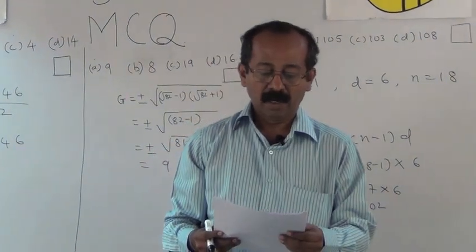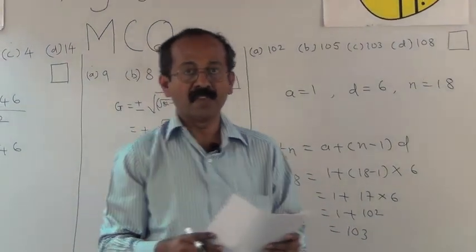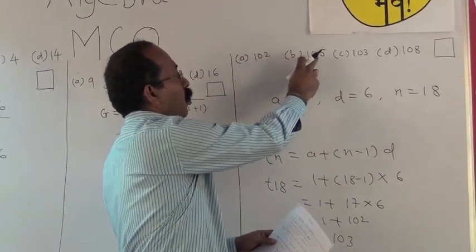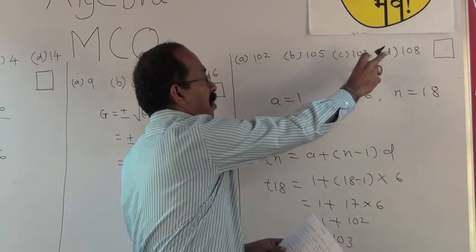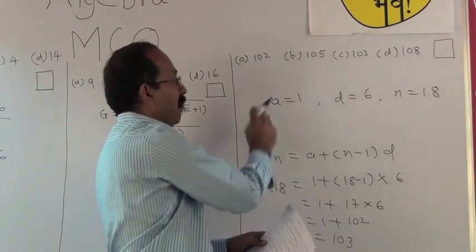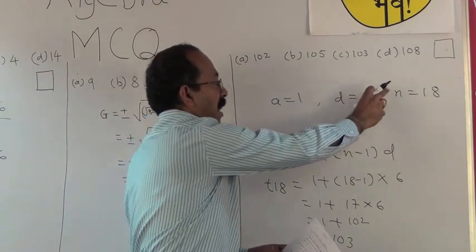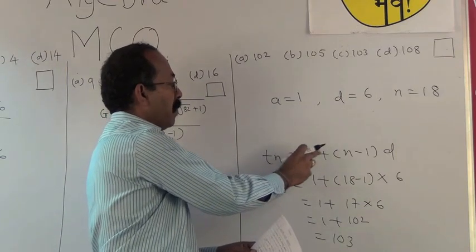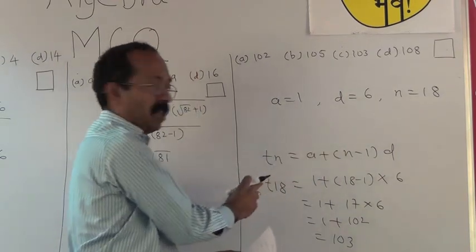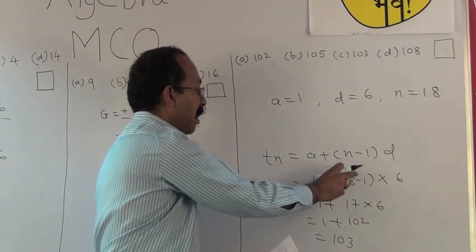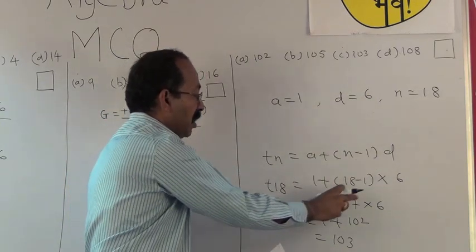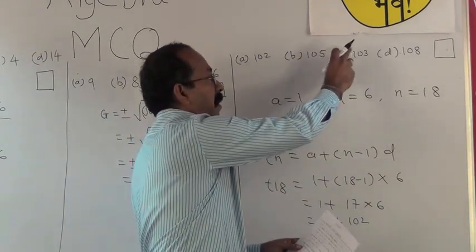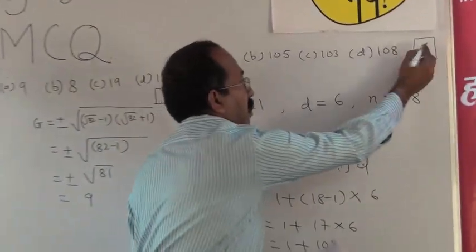First example: write the 18th term of AP 1, 7, 13. The options are a) 102, b) 105, c) 103, d) 108. Here a is 1, difference d is 6 and n is equal to 18. The formula is tn = a + (n-1) × d. Substituting the values: t18 = 1 + (18-1) × 6 = 1 + 17 × 6 = 103. Alternative c represents 103, so alternative c is the correct option.